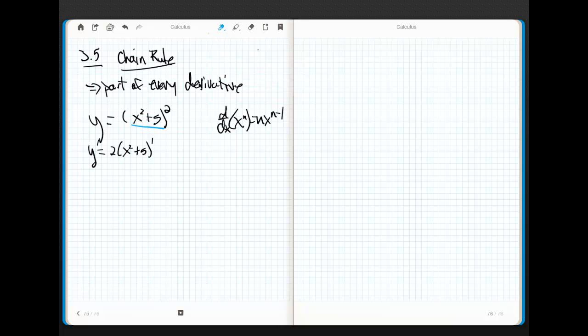Well, the problem here is we have a composition of functions. We have a composition of two functions. Think of this as f of x equals x squared and g of x equals x squared plus 5. So, really, y equals f of g of x. In other words, I'm sticking x squared plus 5 into x squared, and I get x squared plus 5 squared.